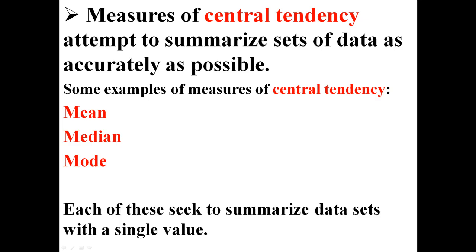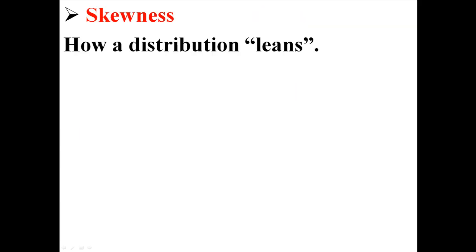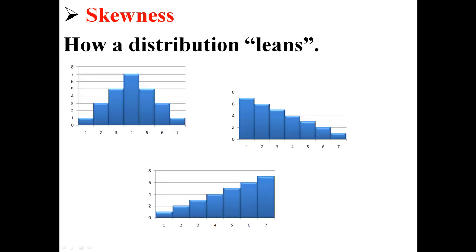Each of these seeks to summarize data sets with many numbers with a single value. Skewness is basically how a distribution of data leans, and it can be something like this.